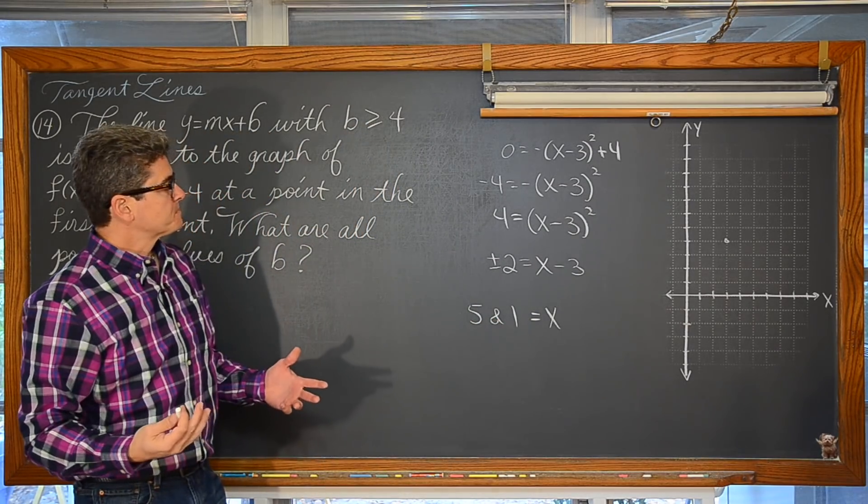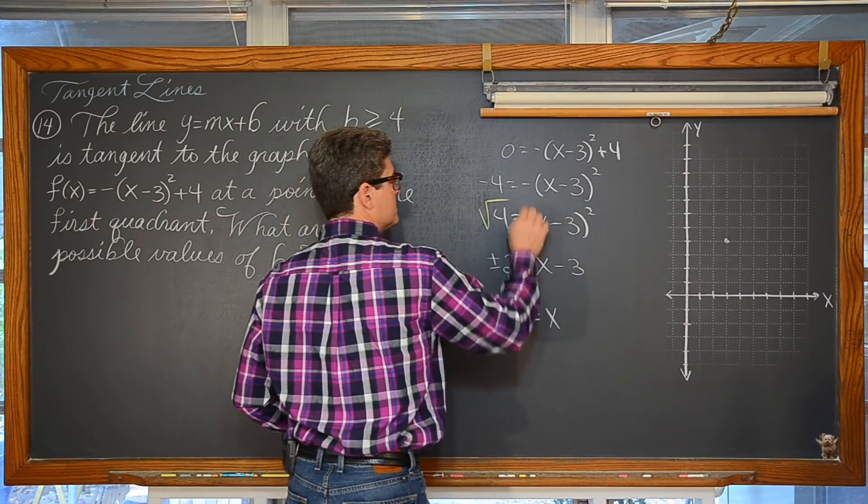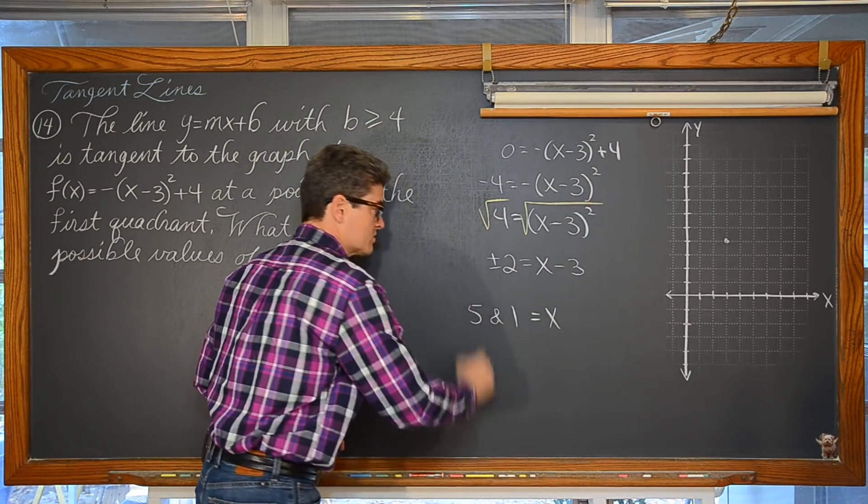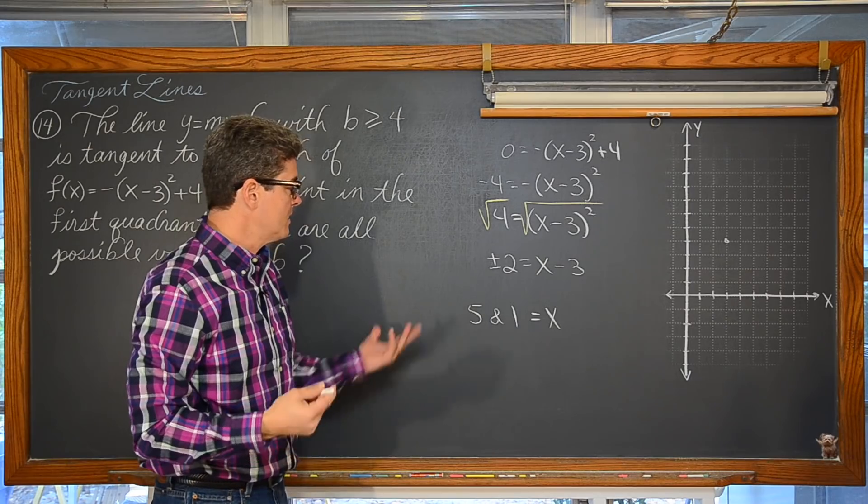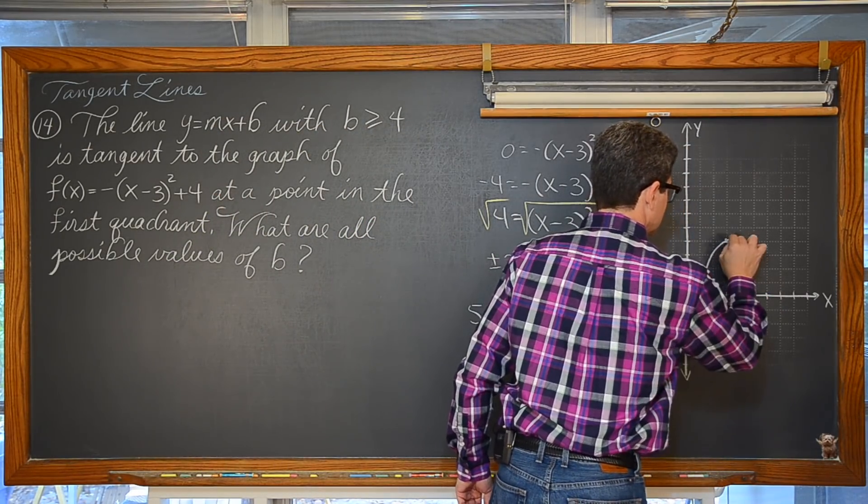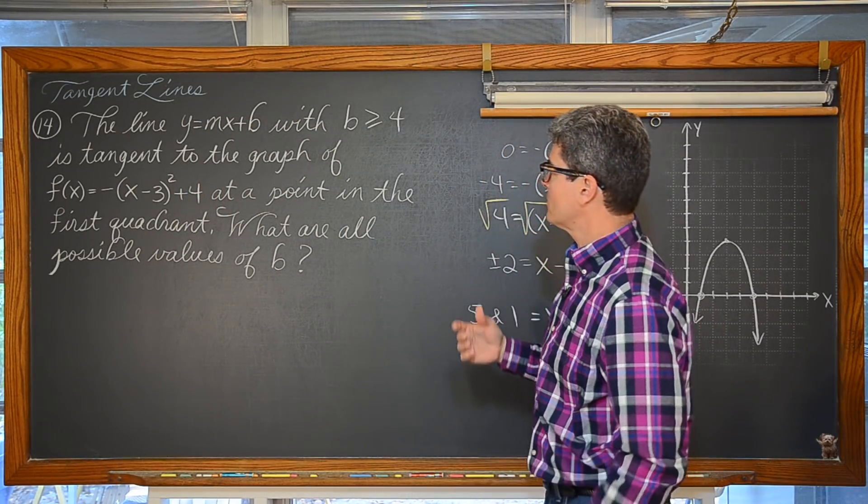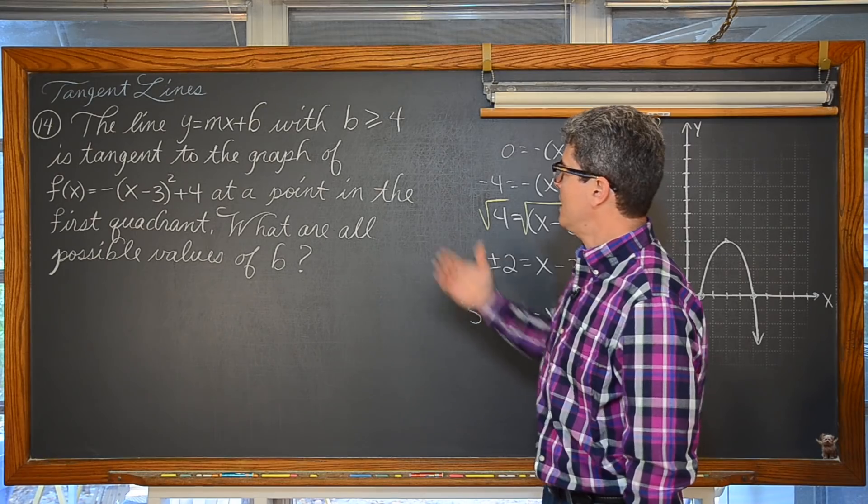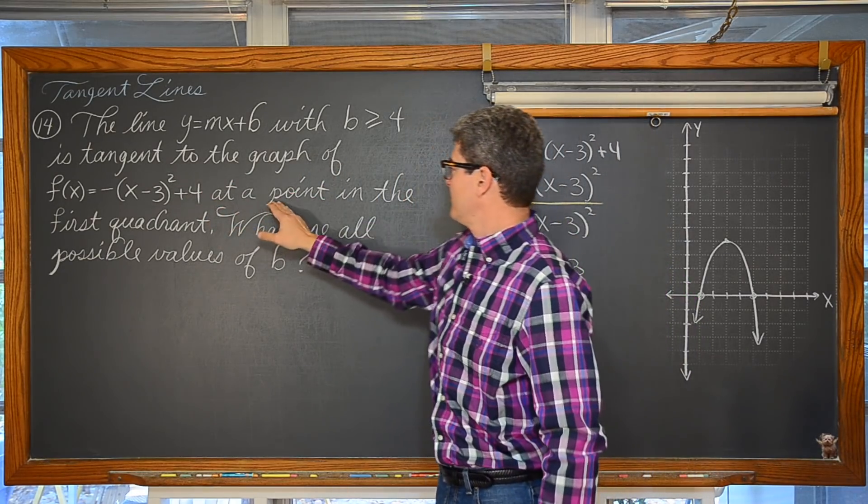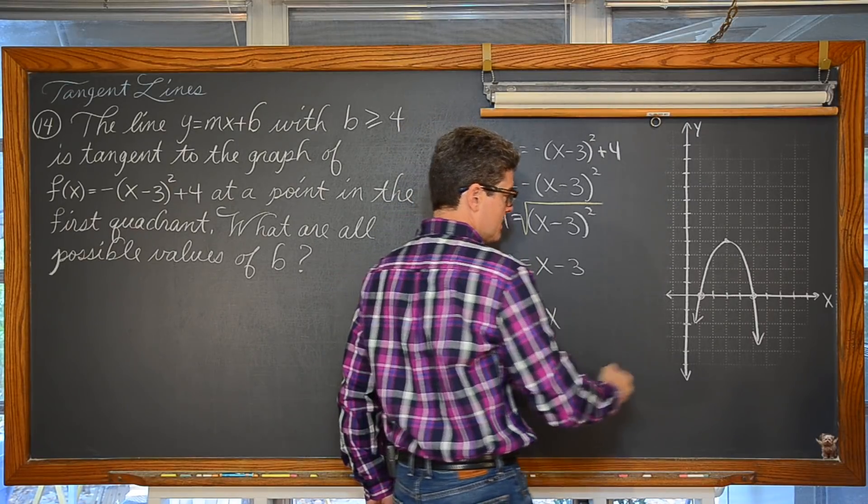So we have 0 equals negative (x minus 3) squared plus 4. Go through a little bit of work here. So of course you know when you introduce your own even root to both sides of an algebraic equation we have to account for both the positive and negative answer. We have x-intercepts of 1 and 5.